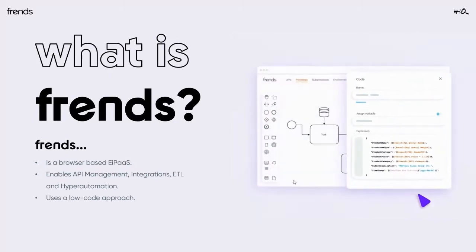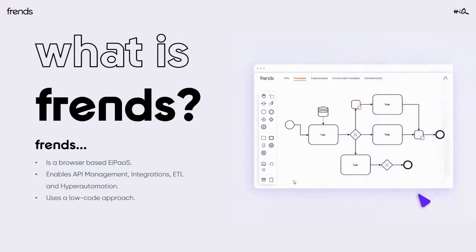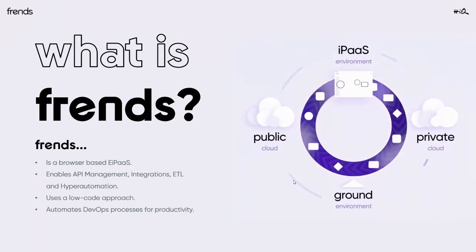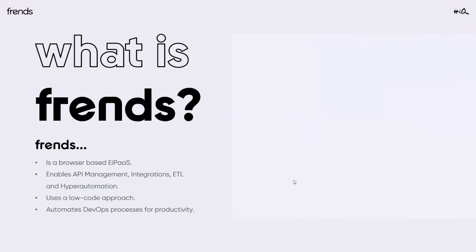We use a low-code approach to speed up development work with Friends, and we want to provide as much automation as possible for all the work that we create and build using Friends. That's the intro to what Friends is — the platform we're developing and using to enable the digital integration hub for various customers.